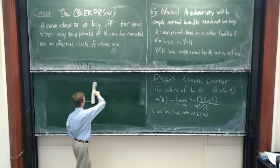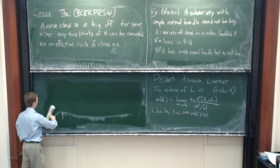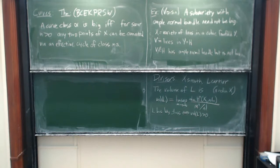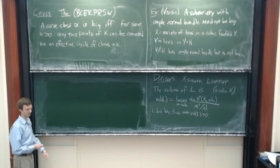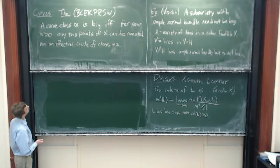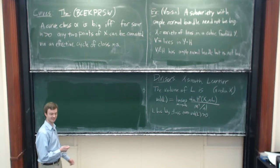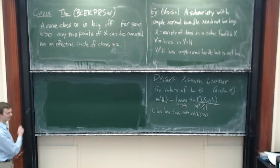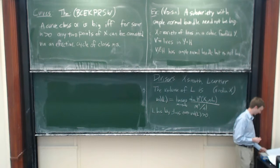This leads us to look for some other approach to understanding bigness of cycles geometrically. The first thing you'd guess would be to look at normal bundles, but that doesn't give quite what we're looking for. What I'm going to talk about today is in response to a conjecture by Debarre, Ein, Lazarsfeld, and Voisin, who predicted that something like this might work.